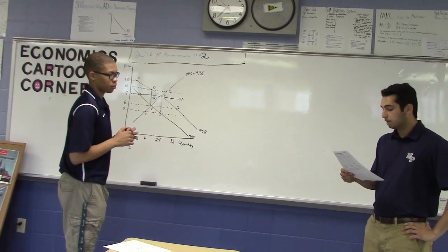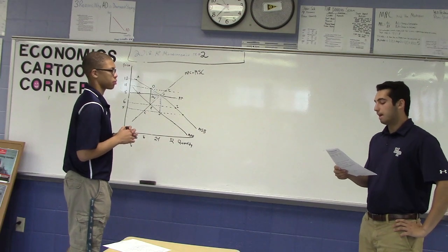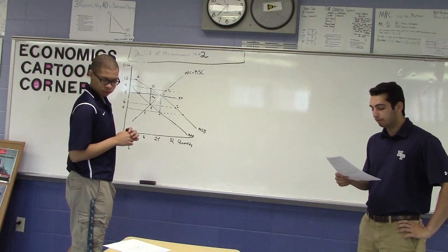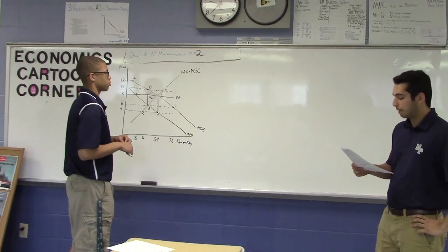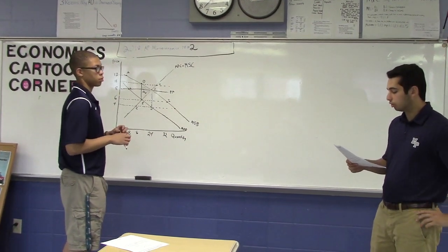In the graph, MSB is the marginal social benefit, MPB is the marginal private benefit, and MPC is the marginal private cost. MSC is the marginal social cost.